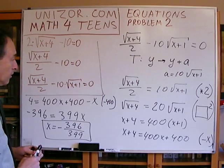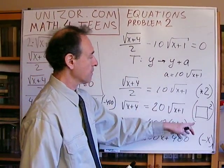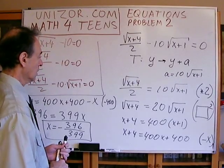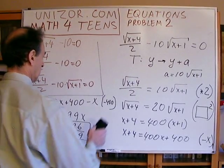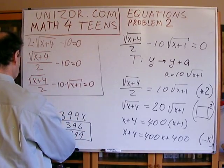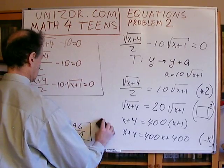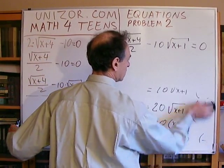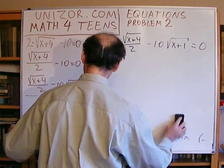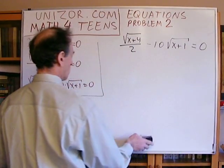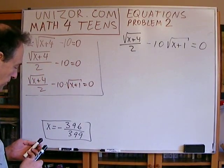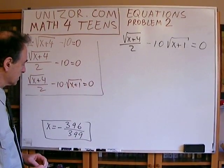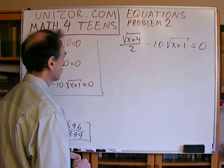Now, what's important is that among all the transformations we used, there was one non-invariant one — squaring — which might have introduced additional solutions. So we must proceed with mandatory checking. I perfectly understand that nobody likes checking, especially with numbers as messy as −396/399. But we must do it; otherwise non-invariant transformations can introduce additional solutions which do not really exist.